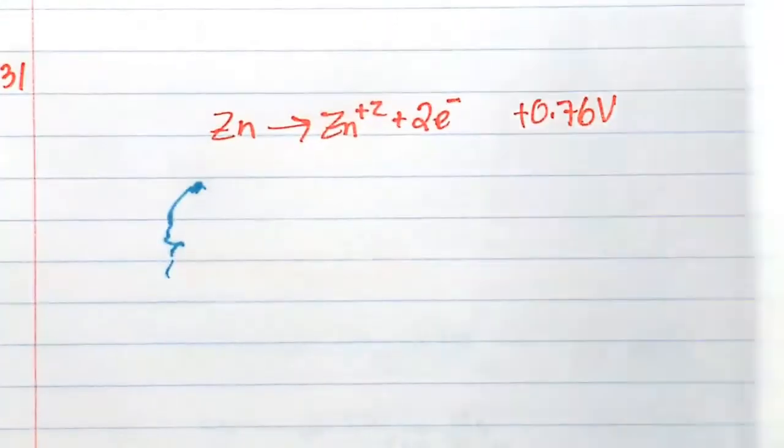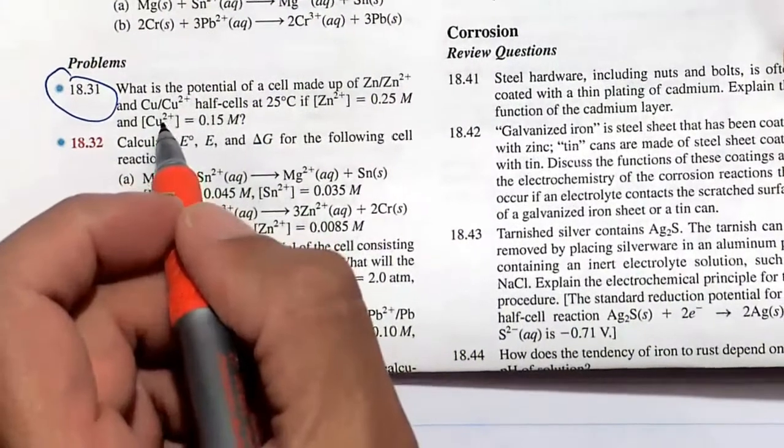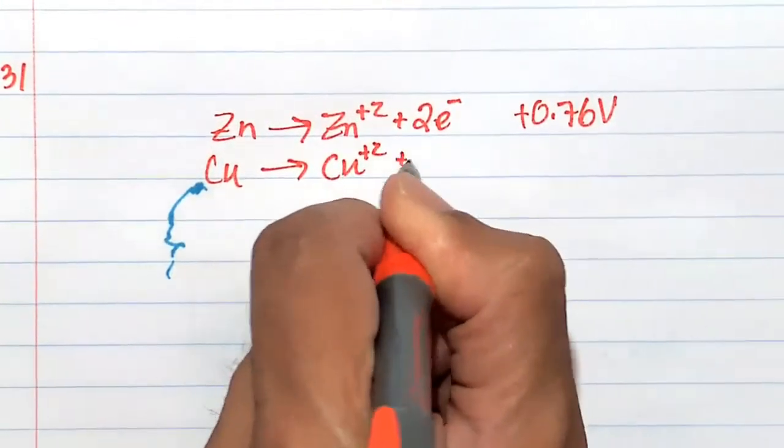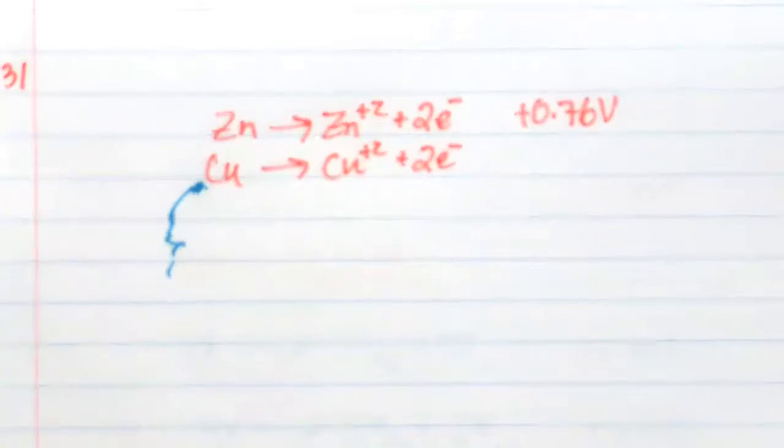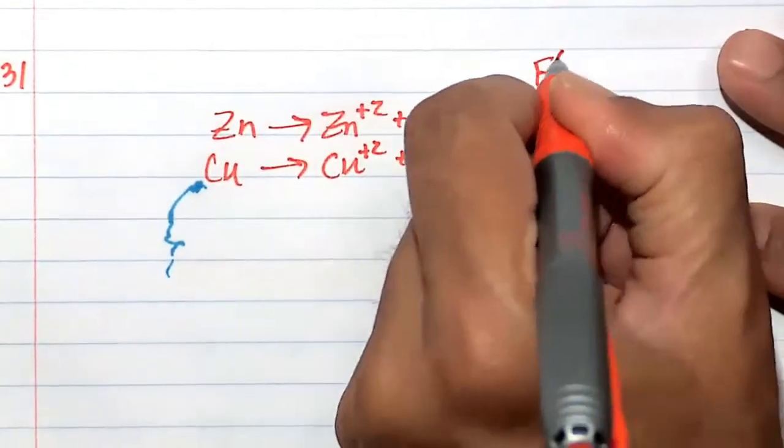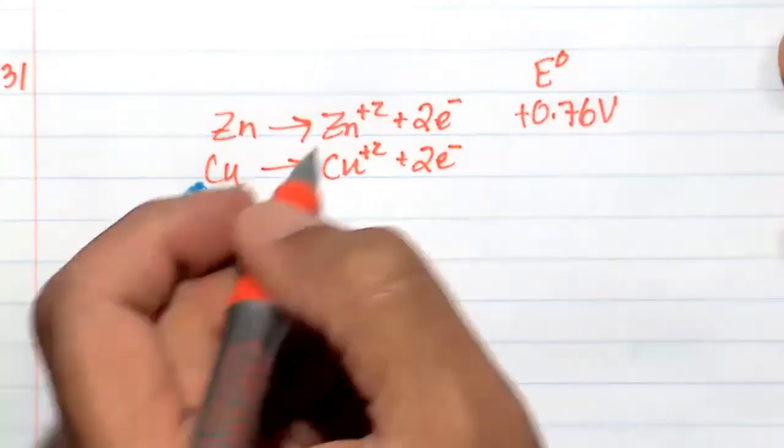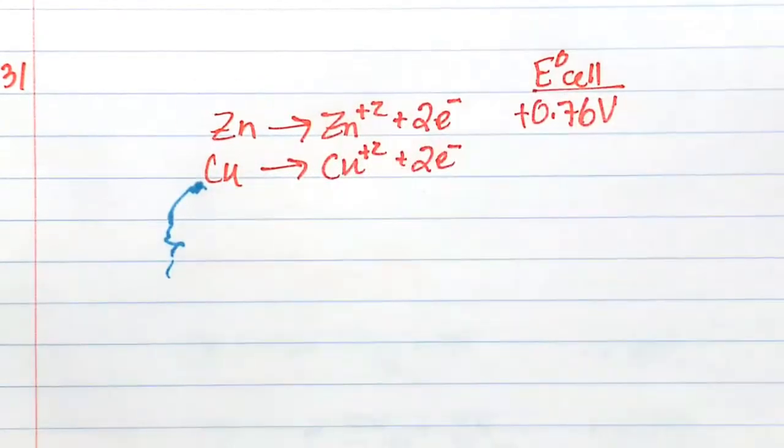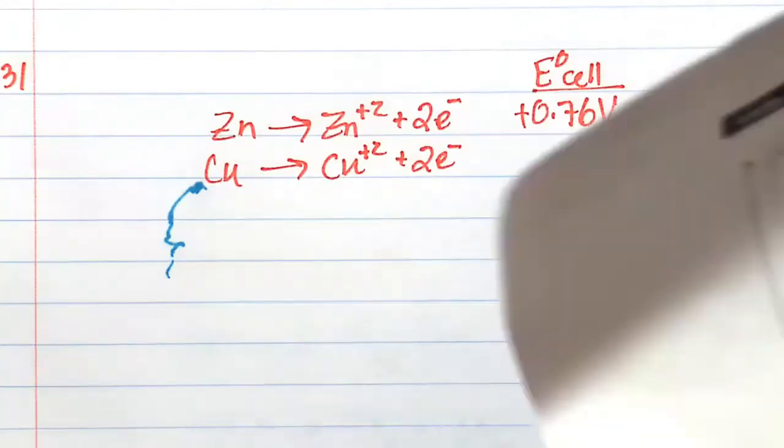The other one is copper going to copper plus two. Obviously one of these has to flip. You can't have a successful couple if they're both losing two electrons. One has to gain electrons, the other has to lose those electrons.